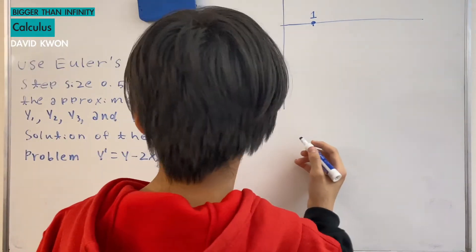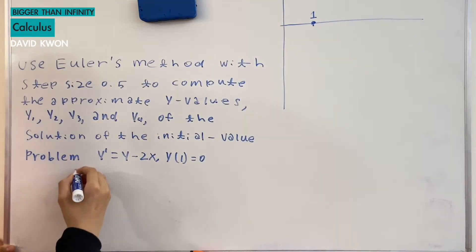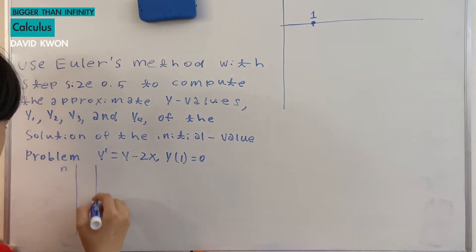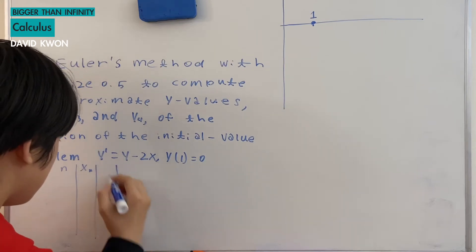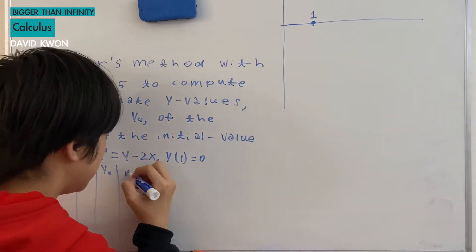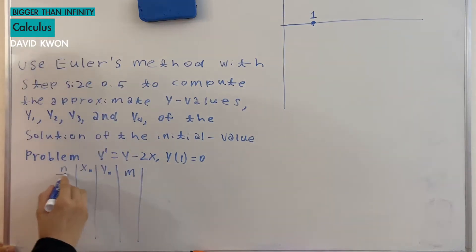Oh yeah also we need to draw the columns. I will have it right here. Okay we have the n, xn and yn and the slope which I will label m.